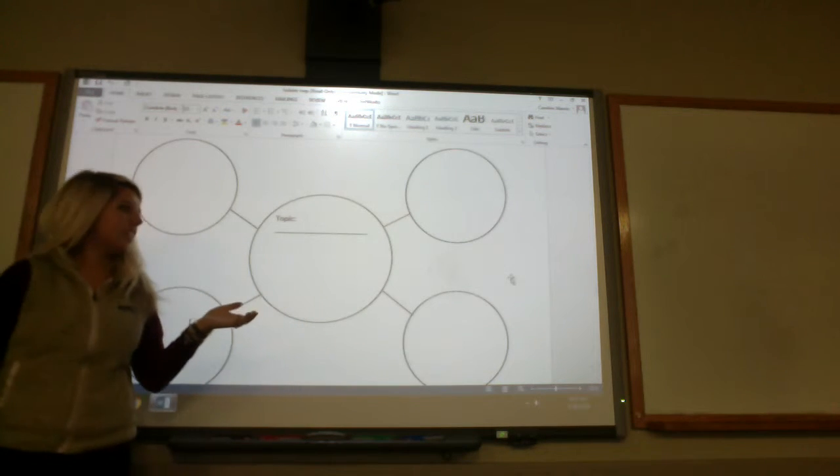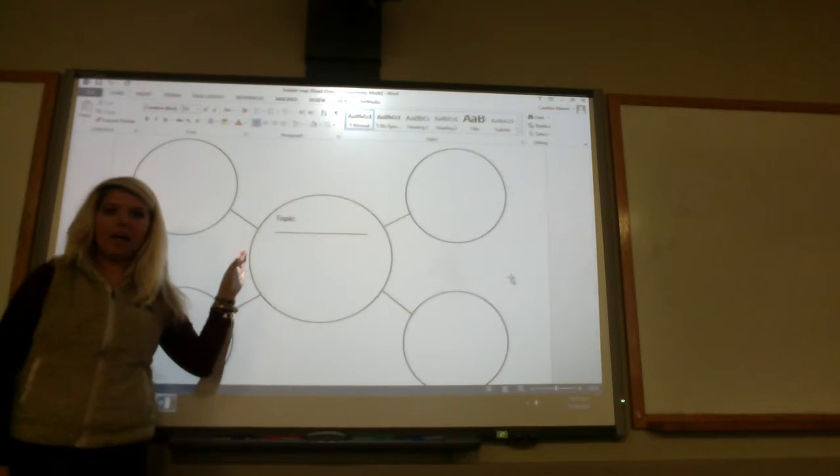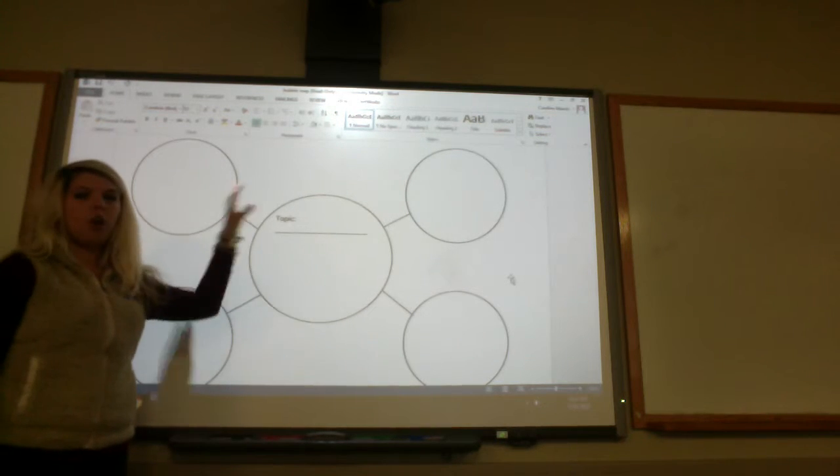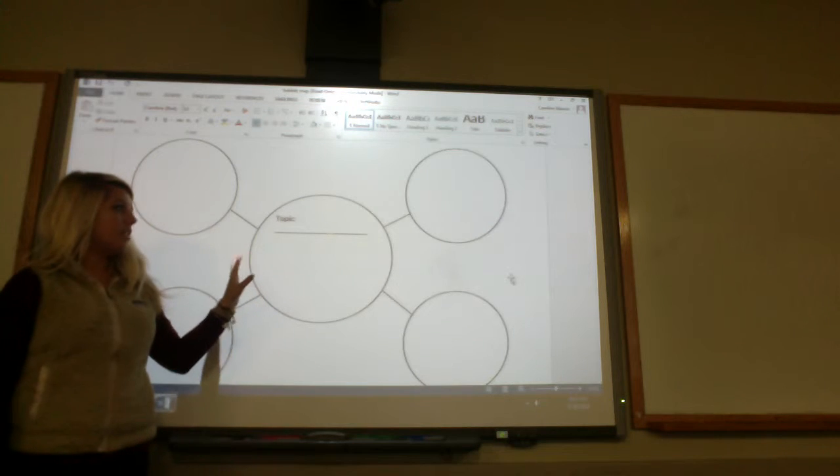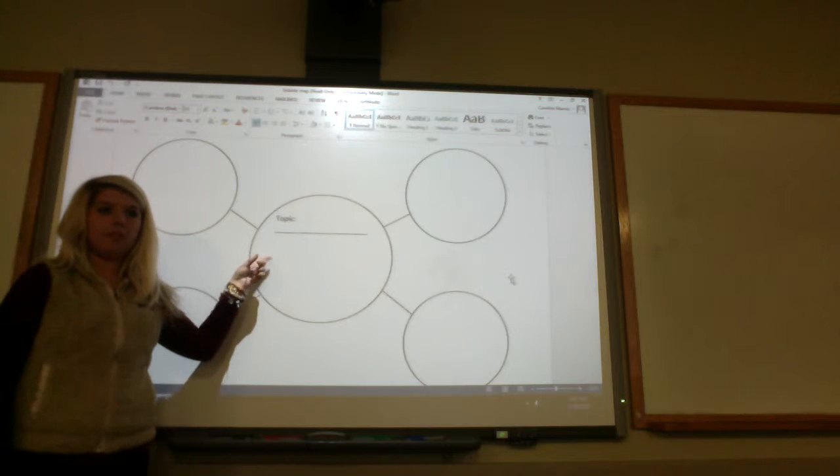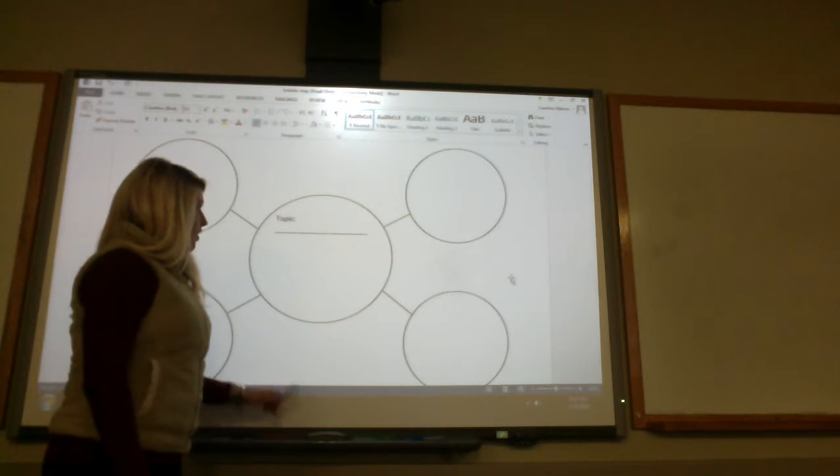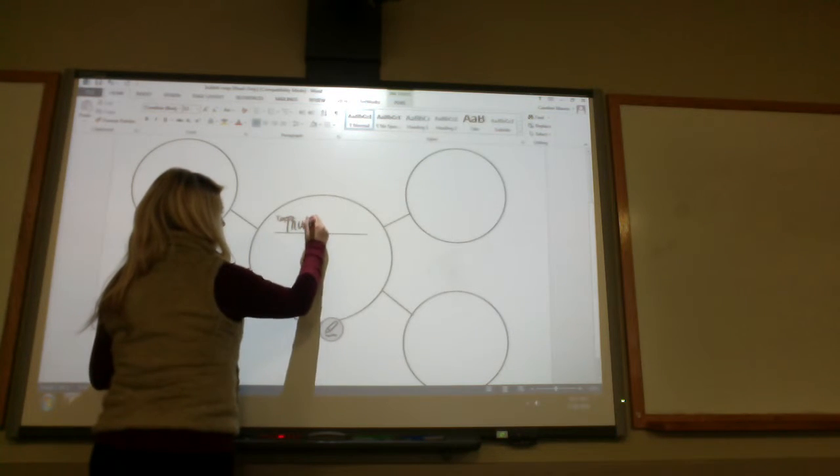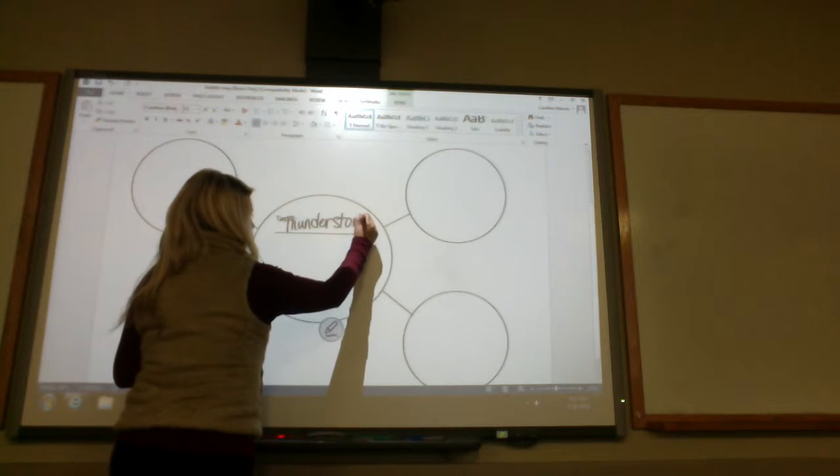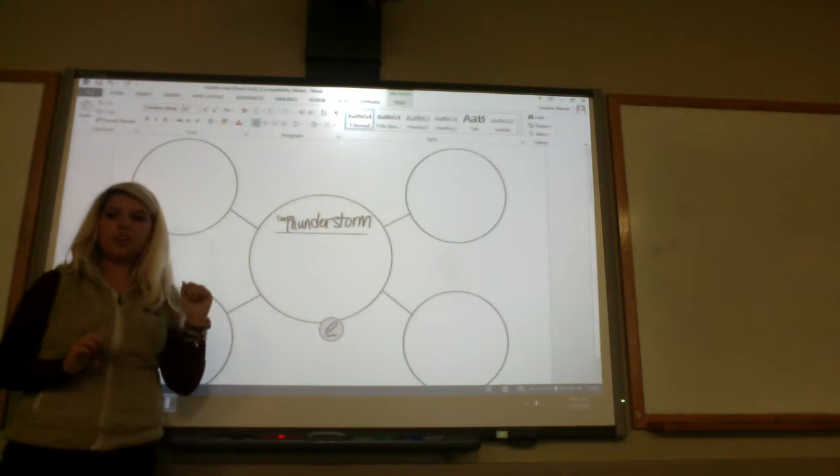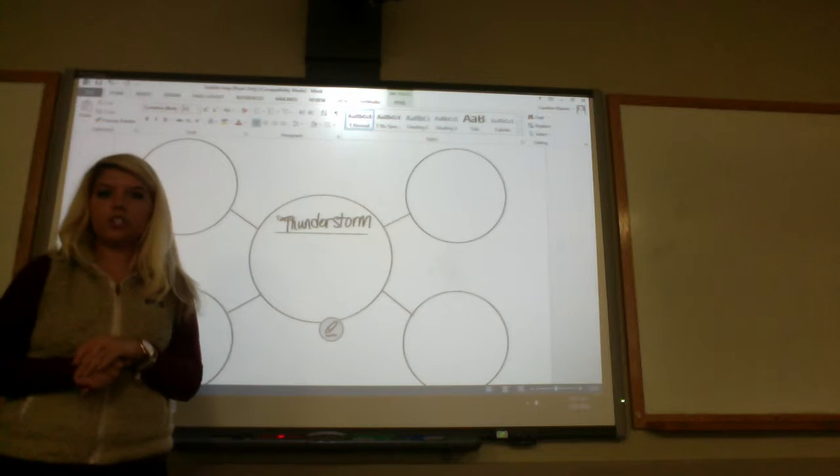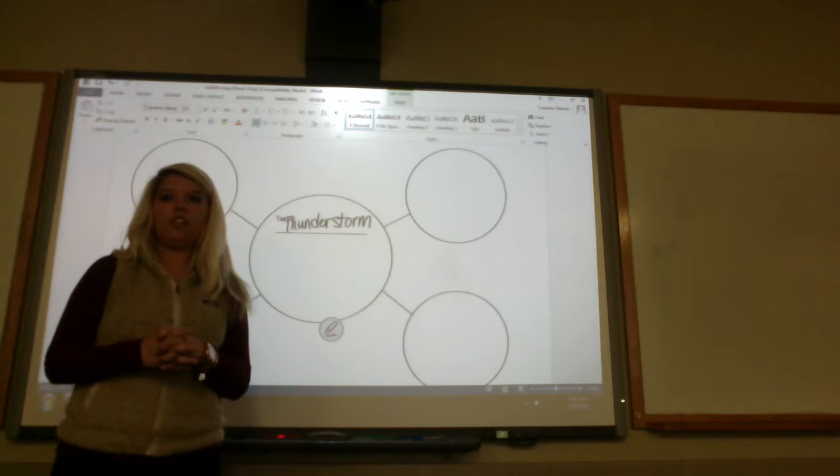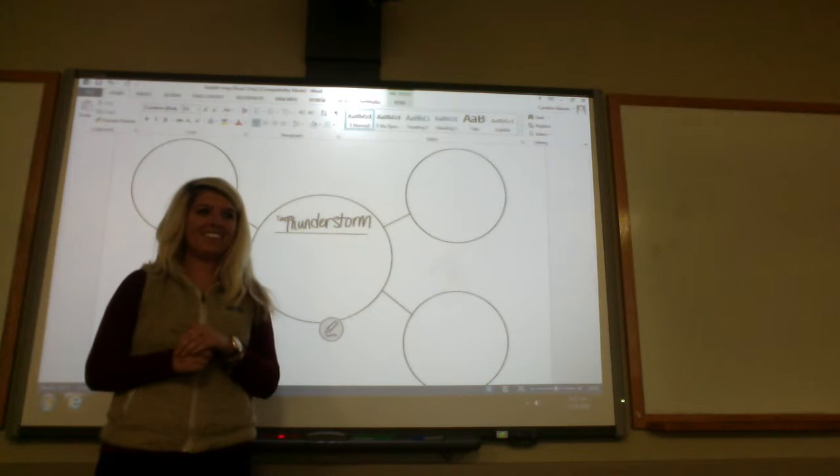Okay class, so we have seen this type of chart recently and we've been calling it our bubble map. We put our main idea here in the big circle and then we put different things about the main idea in the smaller circles around it. So today since we've learned about storms we are going to fill out this bubble map. We're going to put a type of storm that we learned about in this middle big circle as our main idea. Okay, so our main idea today is going to be a thunderstorm because that is a type of storm we learned about in our book. So can somebody tell me characteristics of a thunderstorm that we just learned about? So what do you think would happen in a thunderstorm? It thunders. Okay, there would be thunder.